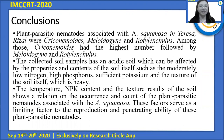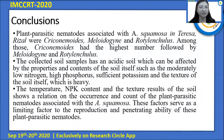For the conclusions, plant parasitic nematodes associated with Anona Squamosa in Teresa, Rizal were Criconemoides, Meloidogyne, and Rotylenchulus. Among those, Criconemoides had the highest number, followed by Meloidogyne and Rotylenchulus. The collected soil samples were acidic, which can be affected by the properties and contents of the soil — such as moderately low nitrogen, high phosphorus, sufficient potassium, and the heavy texture of the soil. The temperature, nitrogen, phosphorus, and potassium content, and the soil texture show a relationship with the occurrence and count of the plant parasitic nematodes associated with Anona Squamosa. These factors serve as limiting factors to the reproduction and penetrating ability of these plant parasitic nematodes.